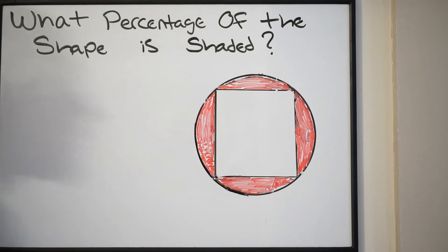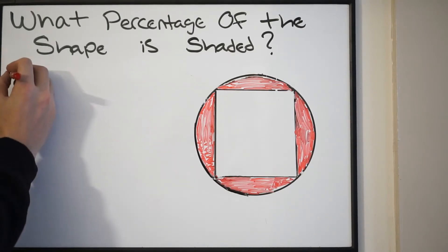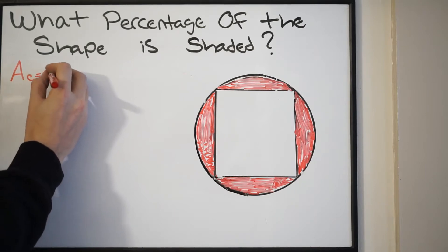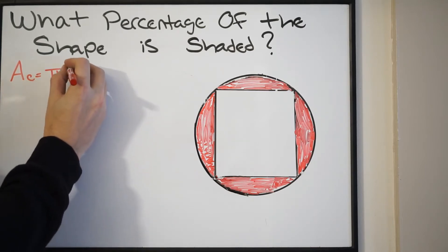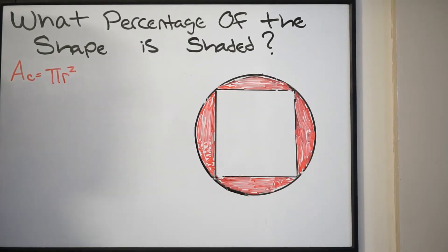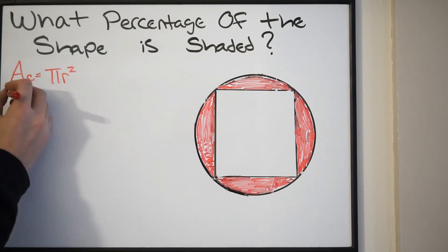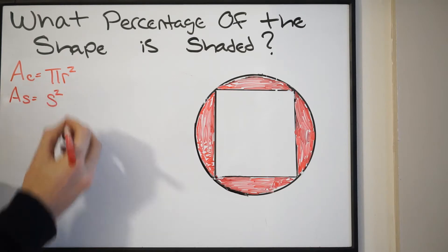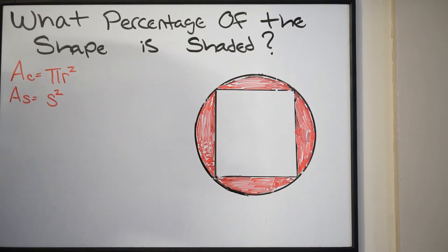First step: what is going to be the area of a circle? We're not given any value, so we'll write out what that would be. Area of a circle is going to be pi times radius squared. And the area of a square is going to be side squared. I'm not given any specific values here, so I want to try to keep my variables consistent.